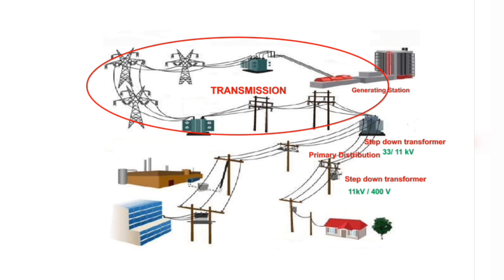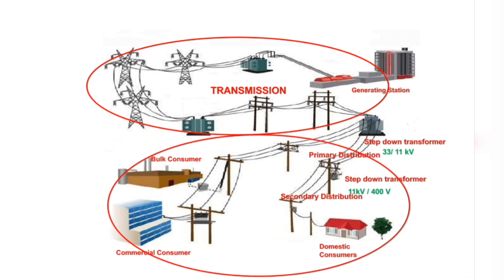From the distribution step-down transformer of 11 kV/400 V, the power is distributed to various consumers like domestic consumers, bulk consumers, and commercial consumers. If the required power of industrial consumers is very high, they are considered bulk consumers, and power is directly fed from the 33/11 kV transformer. The primary distribution and secondary distribution together constitute the distribution system, which is next to the transmission system and supplies power to end users.